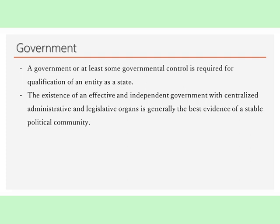Government: A government, or at least some governmental control, is required for qualification of an entity as a state. The existence of an effective and independent government with centralized administrative and legislative organs is generally the best evidence of a stable political community. In certain cases, however, the presence of effective government alone is insufficient to support statehood. But once a government has been established, the absence of governmental authority does not affect the existing state's right to be considered as a state. This is because states have often survived periods of anarchy, civil war and hostile occupation. However, in order for a territory which has not already achieved the status of a state to be considered as such, it must have a government of its own and not be subject to the control of another state. In other words, a puppet state is not a state in international law.